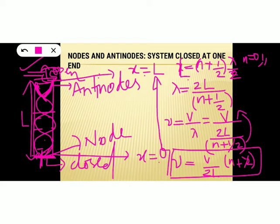From this equation it is clear that the air column can vibrate only for a certain set of frequencies — it cannot vibrate for all frequencies. The air column can vibrate only for odd half-integral multiples of v/2L.